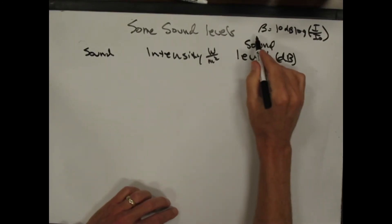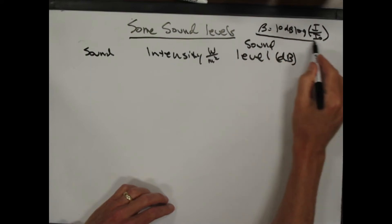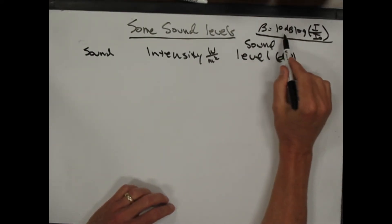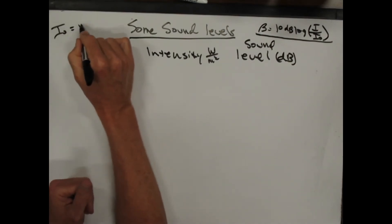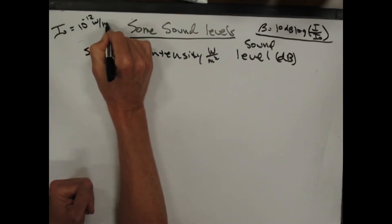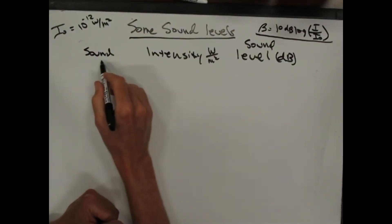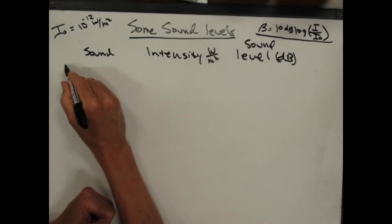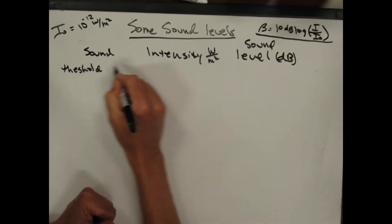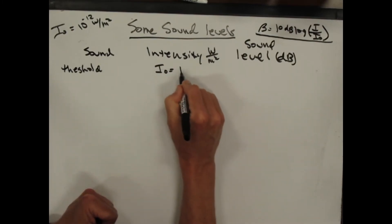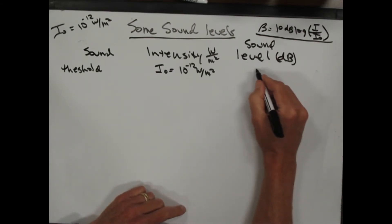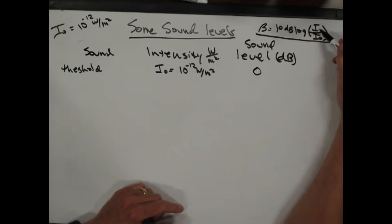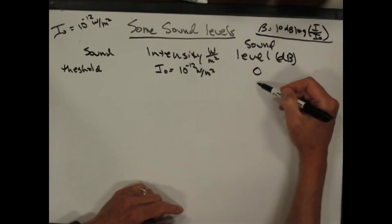So let's calculate some sound levels for common sounds. The formula for sound level is: beta equals 10 decibels times the log base 10 of the intensity over the threshold intensity I zero, where I zero is 10 to the minus 12 watts per square meter — that's the threshold of human hearing. The lowest sound a human can hear has an intensity of I nought, and the sound level comes out to zero, because I nought over I nought is one, and log base 10 of one is zero.